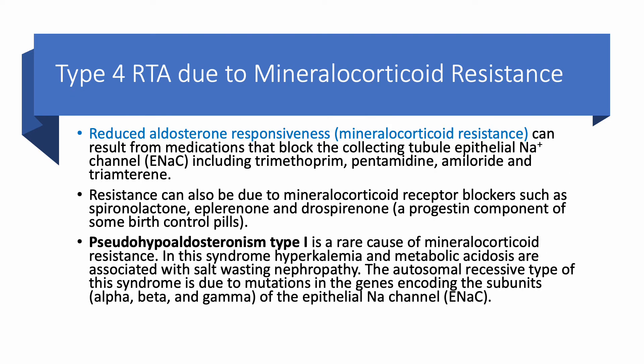Type 4 RTA can also be due to mineralocorticoid resistance or reduced aldosterone responsiveness. Potassium-sparing diuretics like spironolactone and eplerenone cause this. Importantly, trimethoprim blocks the epithelial sodium channel — a test pearl: a patient with chronic kidney disease started on Bactrim for a urinary tract infection may develop hyperkalemia because trimethoprim blocks ENAC, so sodium doesn't go in and potassium cannot exit. Pentamidine acts the same way.